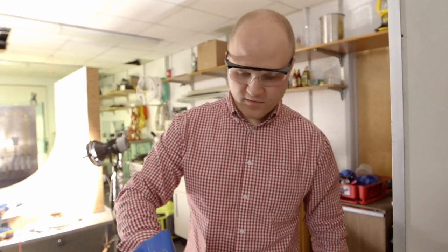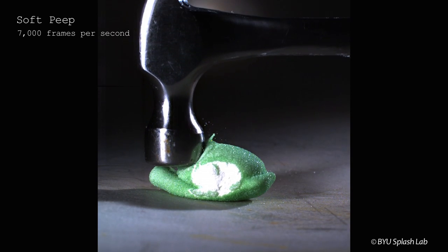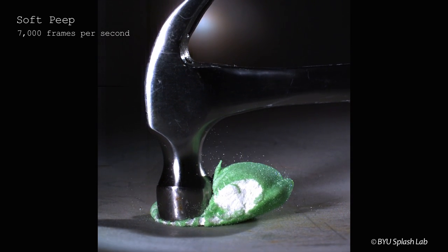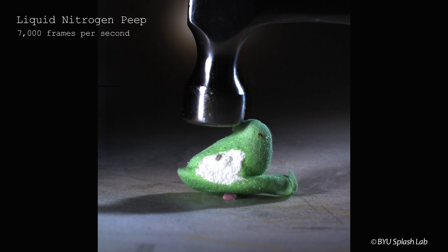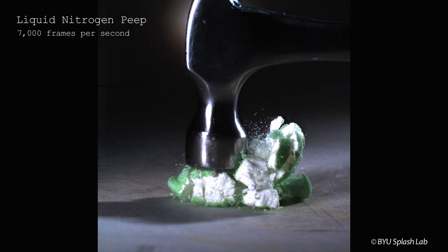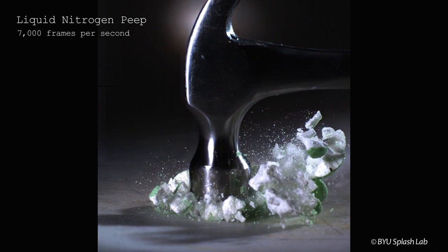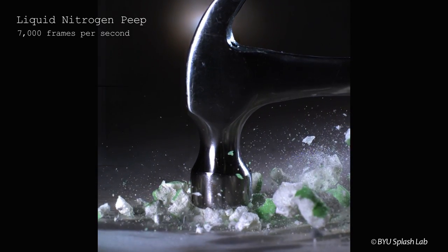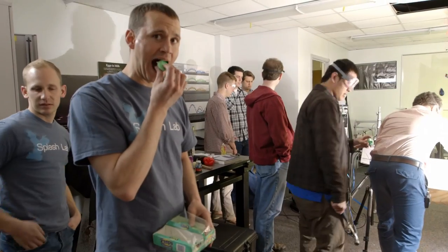Using liquid nitrogen can make things that are normally soft become brittle. Check out the difference between this soft peep and this brittle peep. I hate peeps. That's actually pretty good.